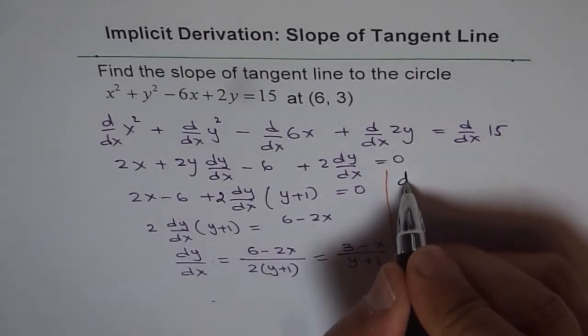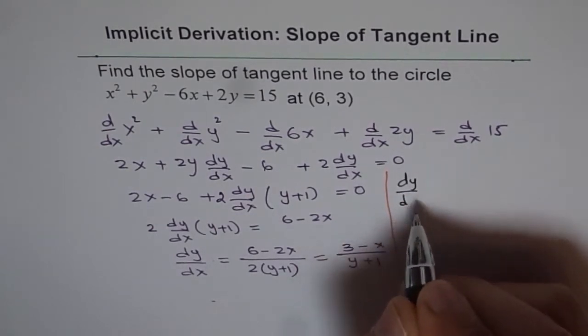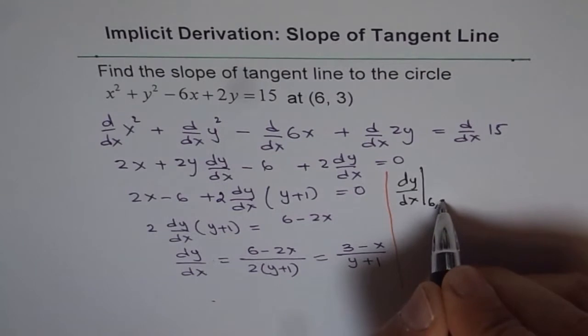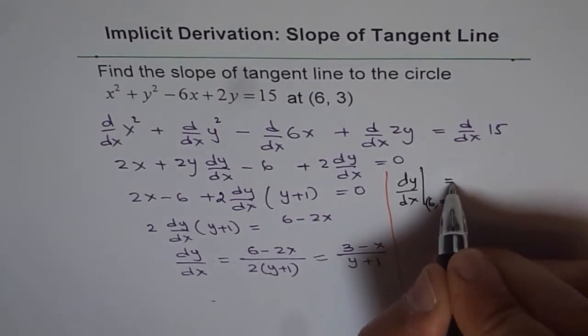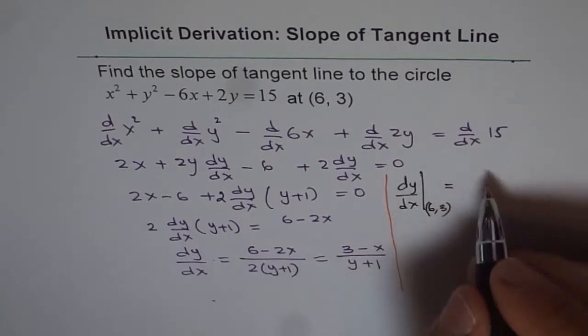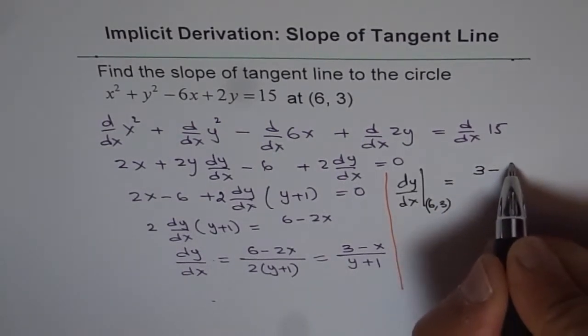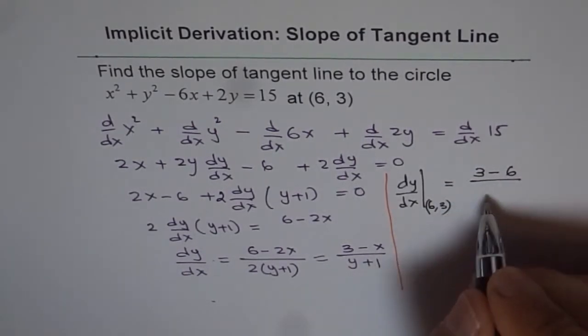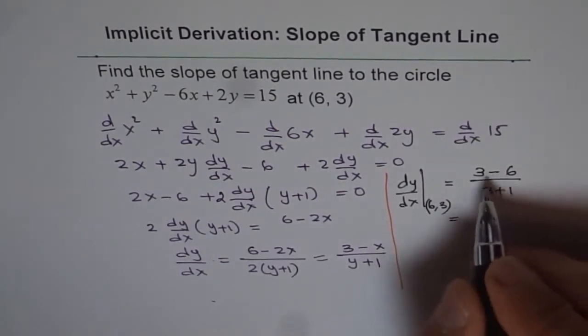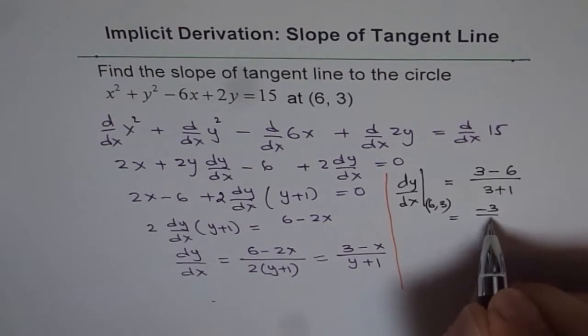The derivative or the slope at the point given to us, which is (6, 3), is equal to: we substitute 6 for x and 3 for y. 3 minus 6 over 3 plus 1, and that gives us minus 3 over 4.